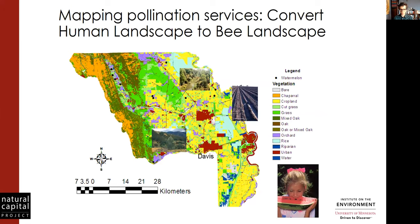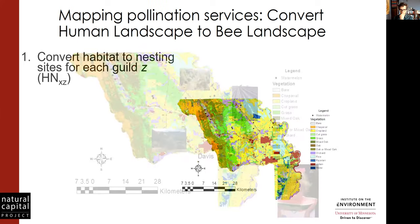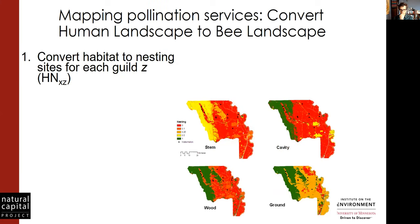We've done a lot of tests in agricultural systems. This was an original study in Yolo County, California, in the Central Valley, where there are lots of different crop types. My colleagues sampled bees in watermelon fields — those are the black dots. The model first translates the landscape into different nesting guilds: stem nesting, cavity nesters, wood, and ground. Green represents good quality and reds are poor quality.